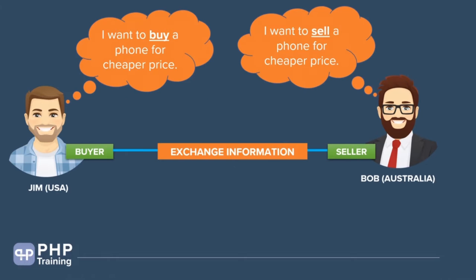We have two characters — Jim from the USA and Bob in Australia — introduced in the web basics section. Jim is a buyer wanting to purchase a phone at a cheaper price, and Bob is the seller. They want to exchange information. HTML helps us understand how that information can be exchanged and what role HTML plays in that process.